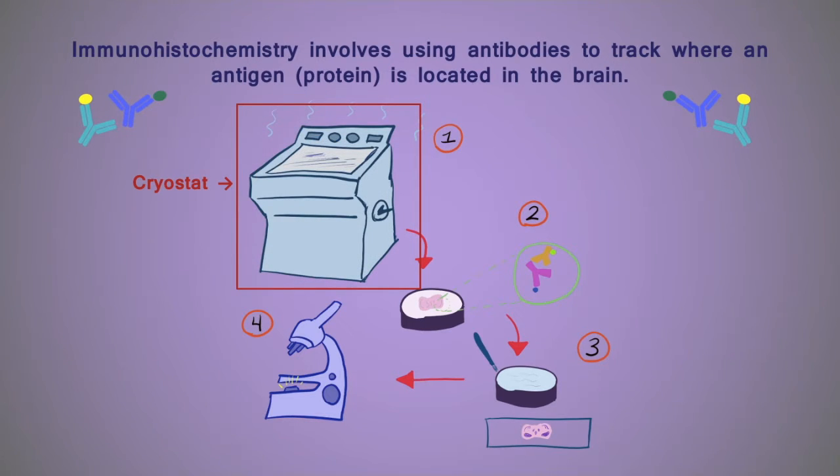Once the tissue samples are prepared, they can then be bathed in a liquid solution that contains the specialized antibodies tagged with the fluorescent marker. If the antigen is present in the tissue sample, the antibodies will bind tightly and irreversibly to all locations where the antigen is detected.